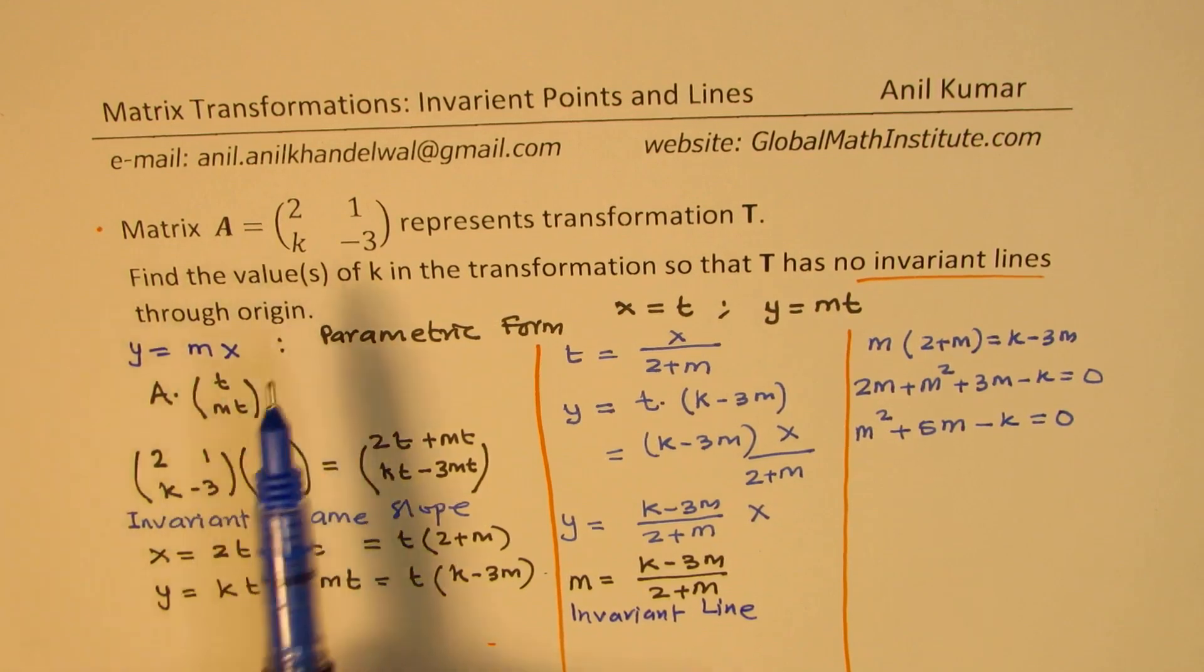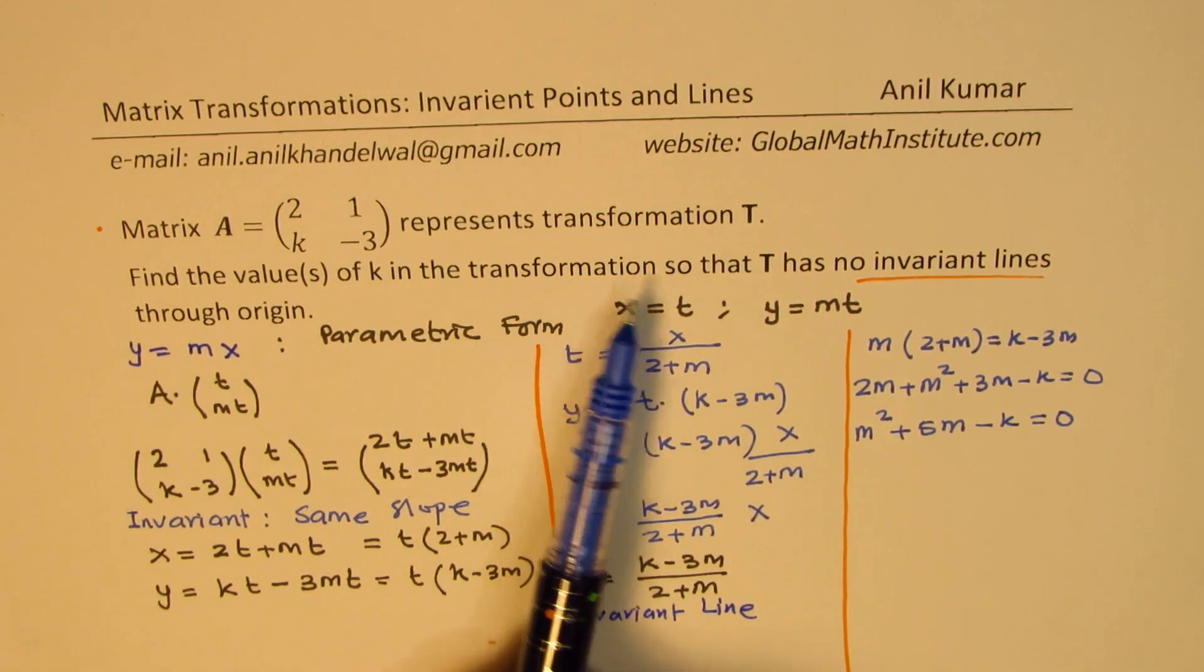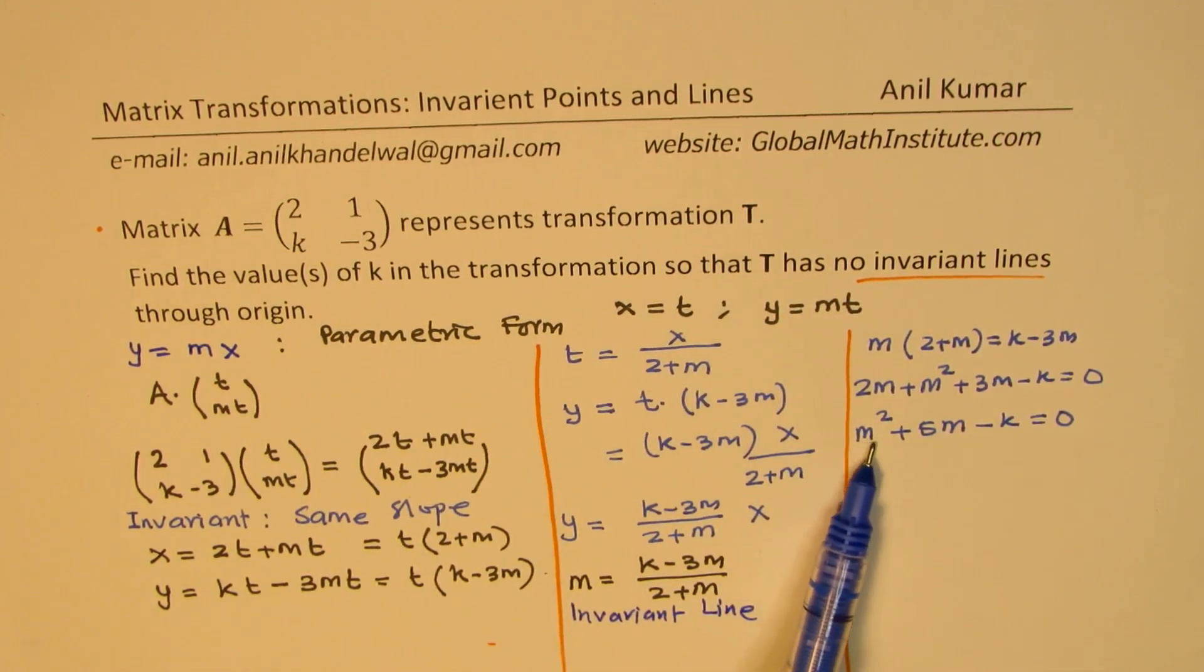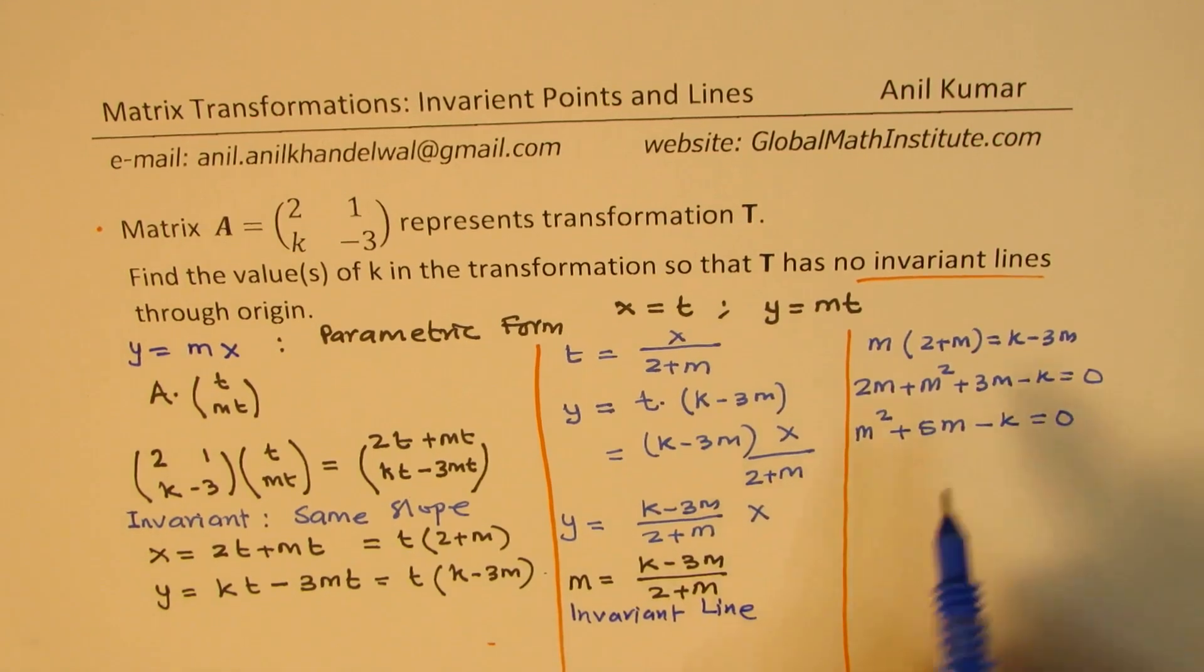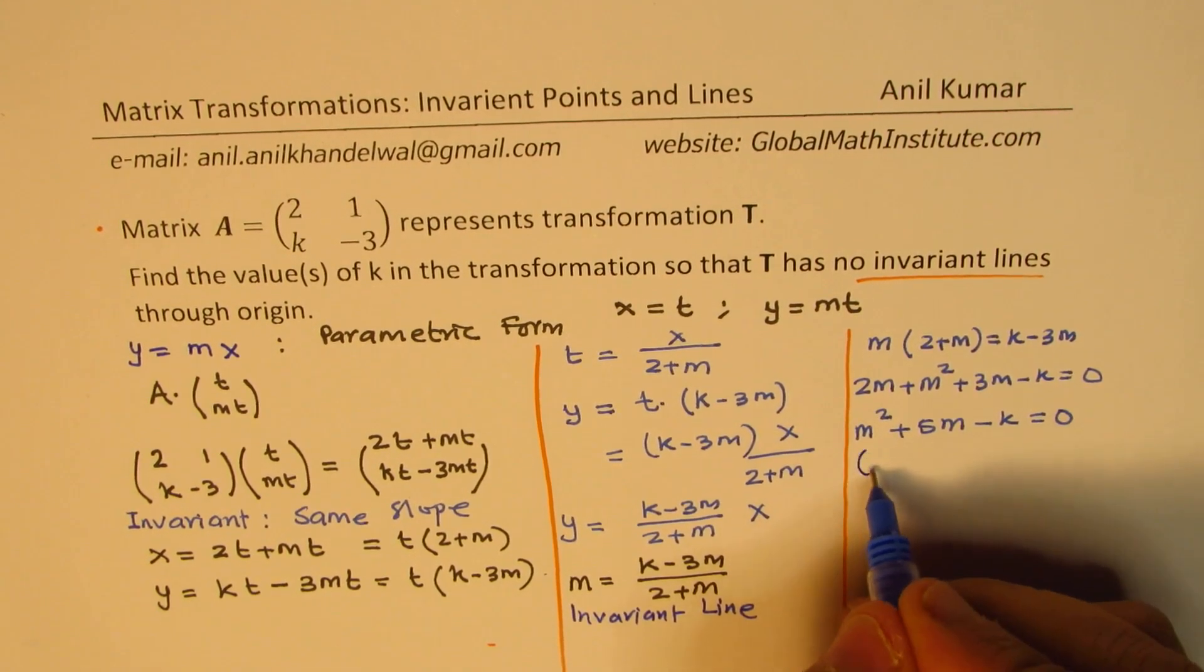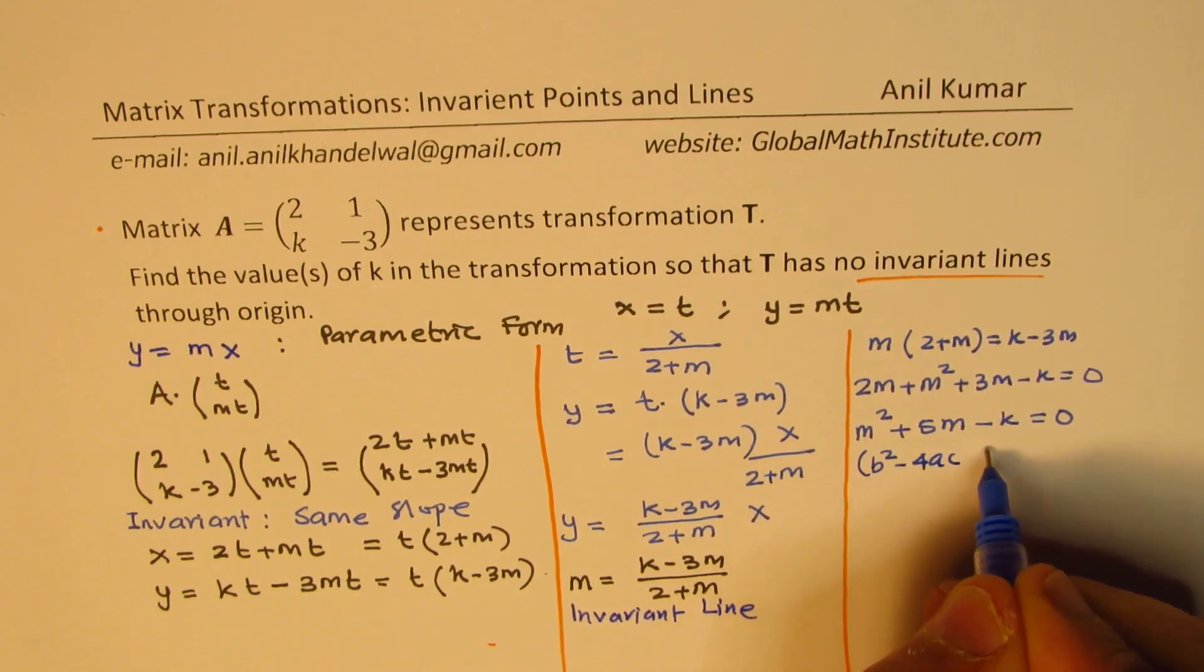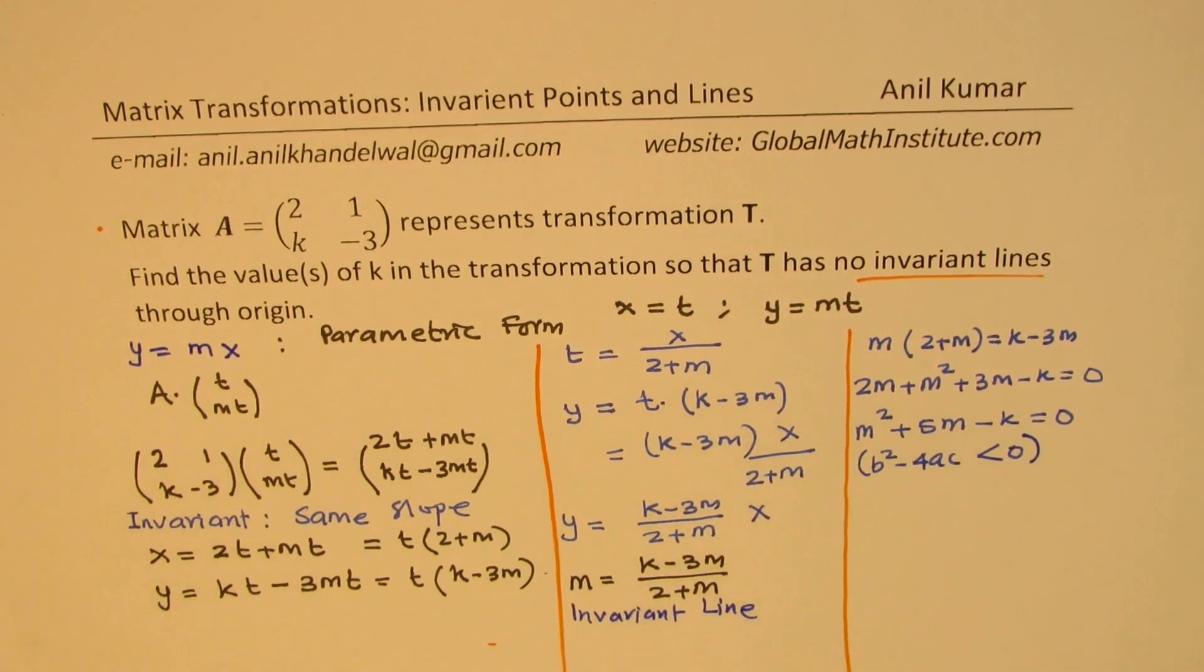Now when we say find the values of k in the transformation so that T has no invariant lines, that means the value of m should not exist. So that means we'll equate the term b square minus 4ac. And if this term is less than 0, then there is no real solution.